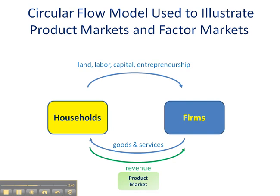Clearly, households initially own all of these things, and they sell these factors to firms — clearly not for free. They are expecting some exchange, and collectively we call these the factor payments. They are rent, wages, interest, and profit. So each of the factors are exchanged for a specific factor payment.